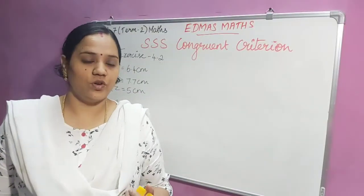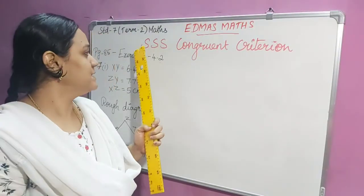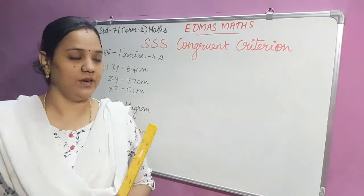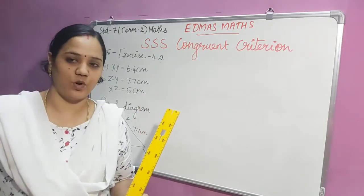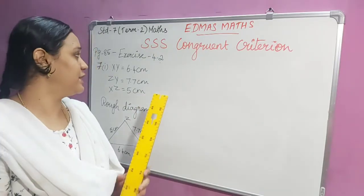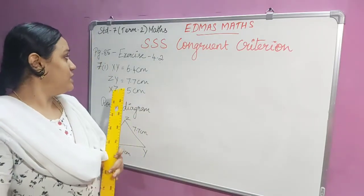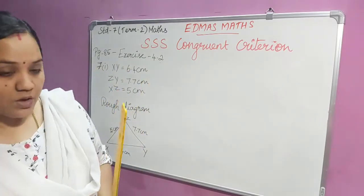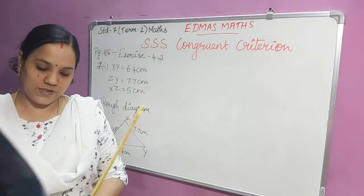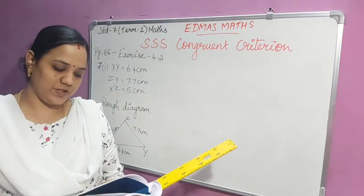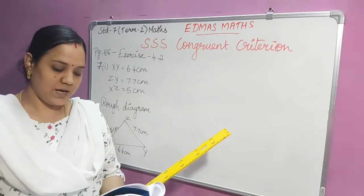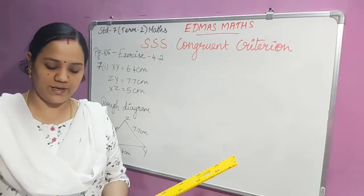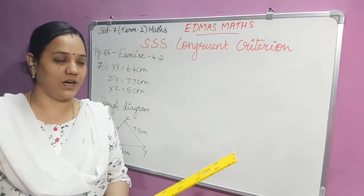In this video we are going to construct a triangle using SSS congruence criterion. Now we are going to draw one example — one exercise problem. See page number 85, exercise 4.2, seventh problem, first option. The seventh question is: construct a triangle XYZ with the given condition.